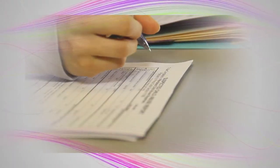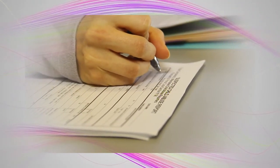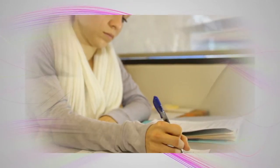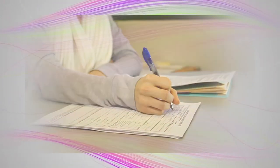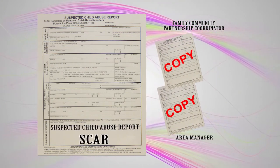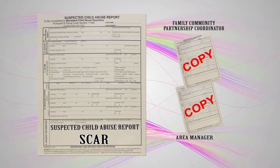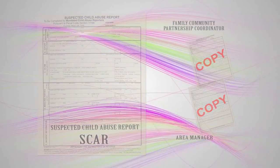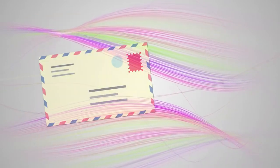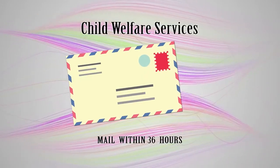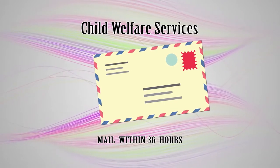If you feel that the child is not in impending danger, complete the SCAR report using the child's file and any pertinent information for the incident. Immediately send copies of the SCAR to the Family Community Partnership Coordinator and the Area Manager. A copy of the CWS report must be sent to Child Welfare Services within 36 hours.